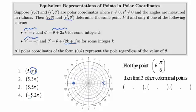Let's try another one. Let's plot the point 6 pi over 6. Now 6 pi over 6 would be a rotation of pi over 6, a radius of 6 would put it right here. To find an equivalent representation of this we could add 2 pi to this rotation and we would get the ordered pair 6, 13 pi over 6.